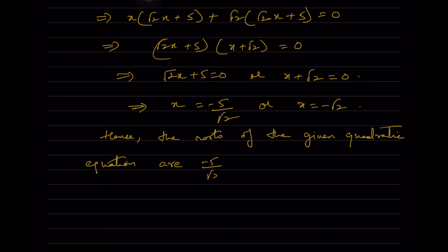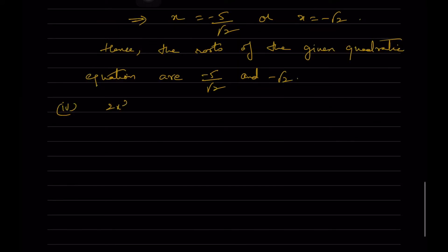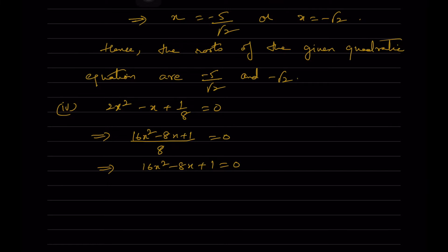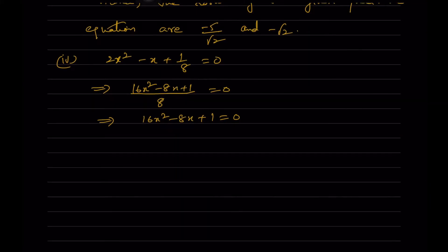Hence the roots of the given quadratic equation are -5/√2 and -√2. The fourth one: 2x² - x + 1/8 = 0. Taking LCM of 8, we get 16x² - 8x + 1 = 0. Here a = 16, b = -8, c = 1.